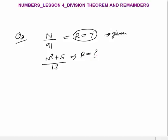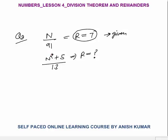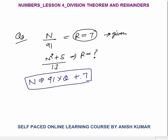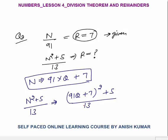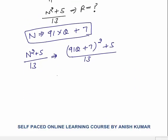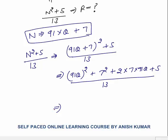Question 2: a number N when divided by 91 gives remainder 7. N squared plus 5 divided by 13 — what will be the remainder? Number equals divisor into quotient plus remainder: N equals 91Q plus 7. We need (91Q plus 7) squared plus 5, all divided by 13. Expanding: 91 squared Q squared plus 7 squared plus 2 into 7 into 91Q, plus 5, divided by 13.